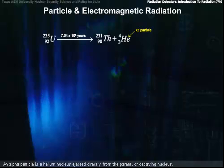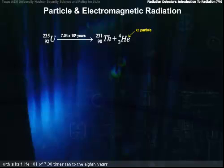An alpha particle is a helium nucleus ejected directly from the parent or decaying nucleus. A typical alpha decay is the following. U-235 decays to thorium-231 plus an alpha particle with a half-life of 7.038 times 10 to the 8th years.